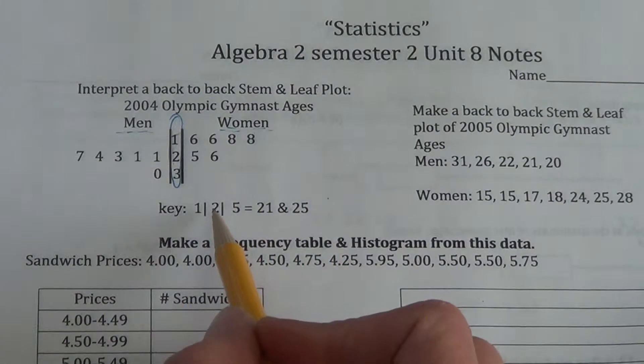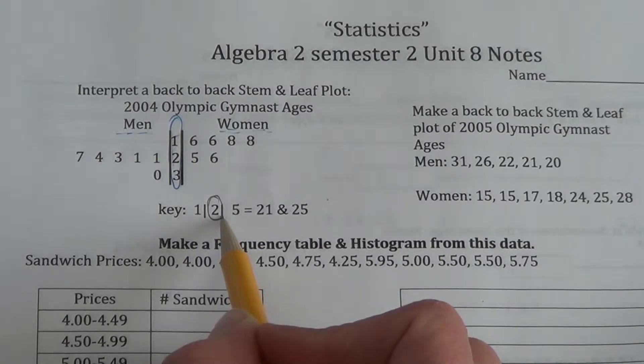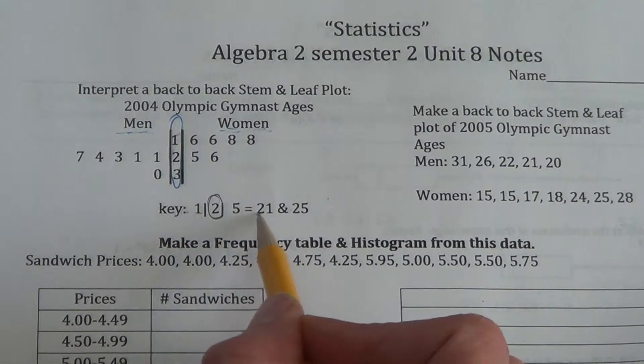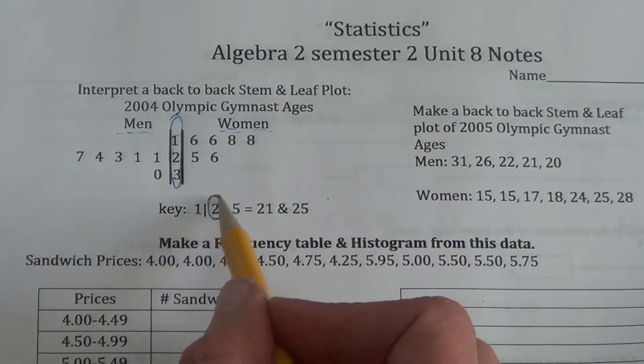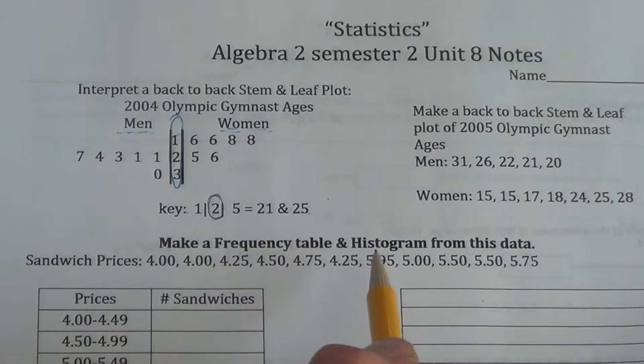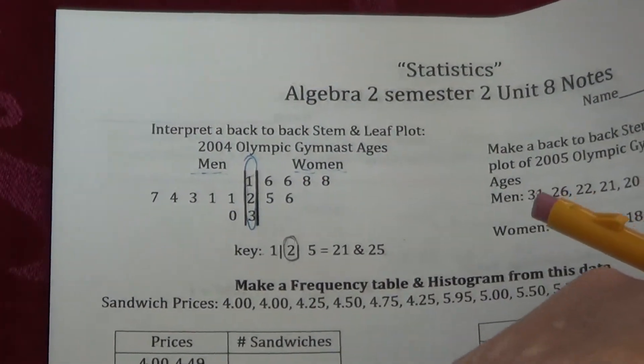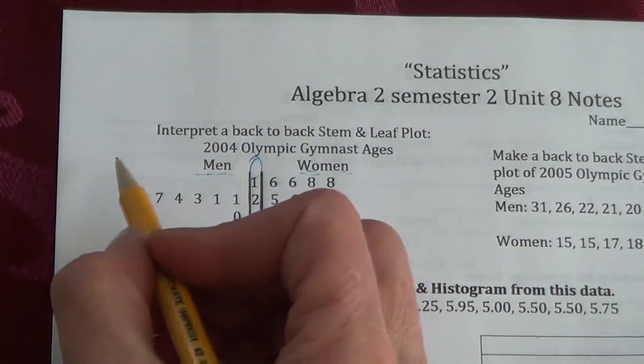This is the ages of the gymnasts in recent Olympics. And then if we look at the key, it shows us here's our stem. And the age of the man listed this way is 21. The age of the woman listed this way is 25. So from that table, I'd like you to simply list those ages that you see for the men.